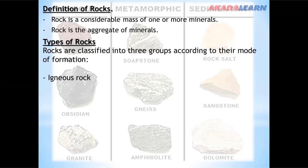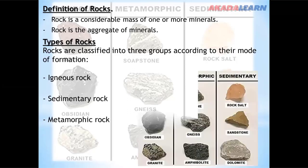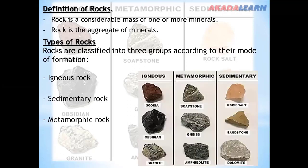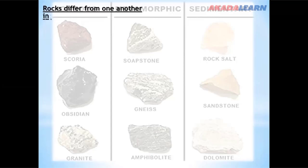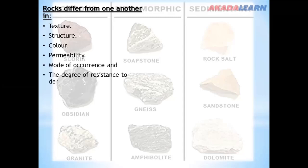We have igneous rock, sedimentary rock, and metamorphic rock. Rocks differ from one another in the following ways: texture, structure, color, permeability, mode of occurrence, and the degree of resistance to erosion.